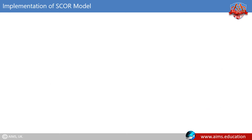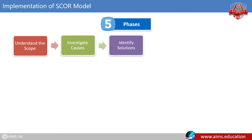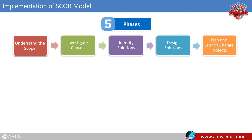Implementation of the SCOR model typically comprises five phases: understand the scope, investigate causes, identify solutions, design solutions, and plan and launch change projects.